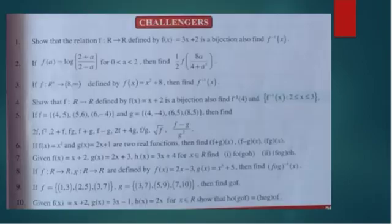Eighth question: f from R to R is defined as f(x) = 2x - 3 and g(x) = x³ + 5, then find fog(-7) and fog(x).